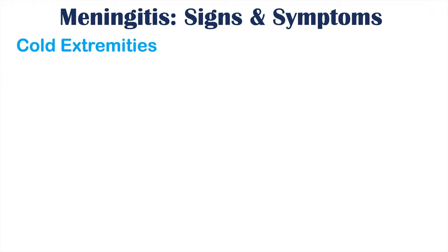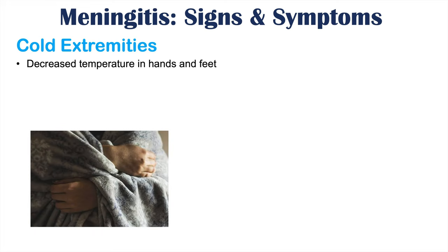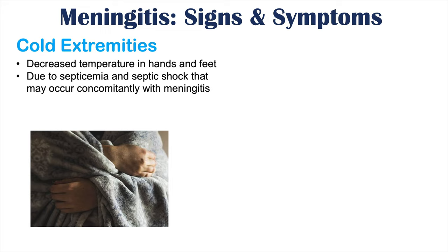Patients with meningitis can also have cold extremities, including decreased temperature in the hands and feet. This can be due to septicemia — having bacteria in the blood — and septic shock that may occur concomitantly with meningitis. This can lead to shock where there is not enough blood supply getting to the extremities, which is why we can see cold extremities.